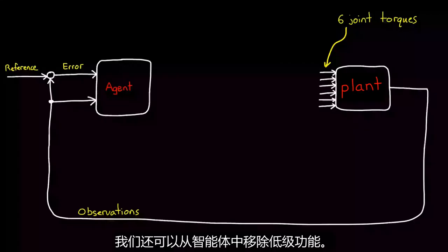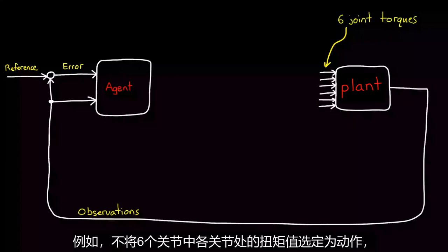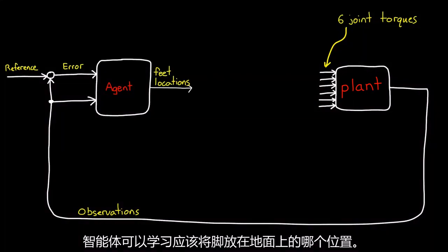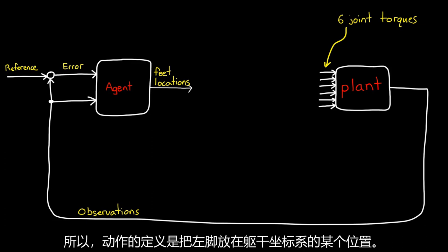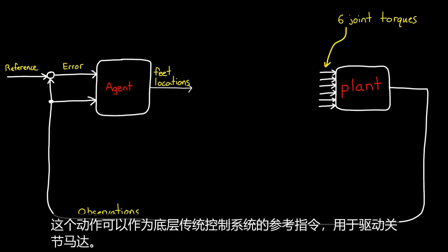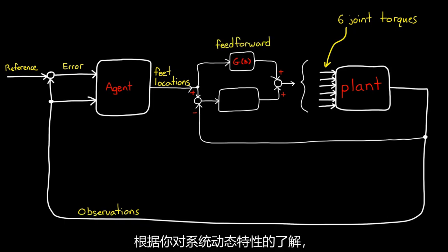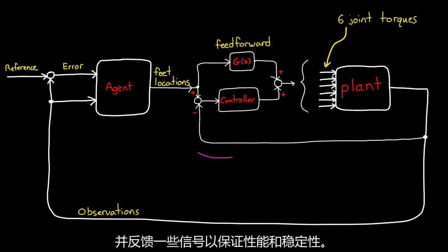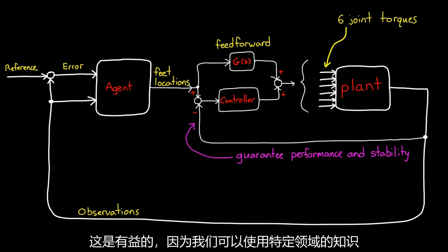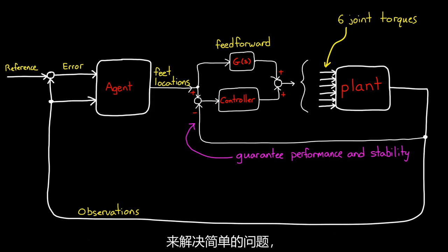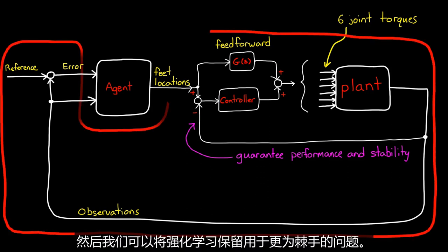We can also remove low-level functionality from the agent. For example, instead of the actions being the low-level torques for each of the six joints, the agent could just learn where to place its feet on the ground. So the action would be place left foot at some location in the body coordinate frame. This action could be the reference command for a lower-level traditional control system that drives the joint motors. You know, something that might feed forward a torque command based on your knowledge of the dynamics of the system and then feed back some signal to guarantee performance and stability. And this is beneficial because we can use our specific domain knowledge to solve the easy problems. And that's going to give us insight and control over the design. And then we can reserve reinforcement learning for the problems that are more difficult.